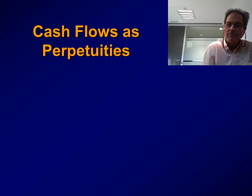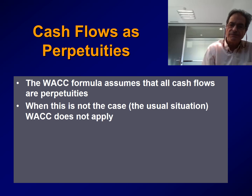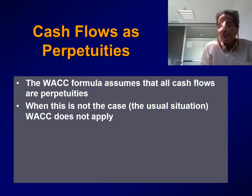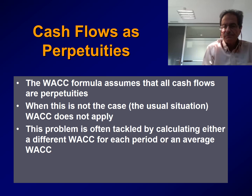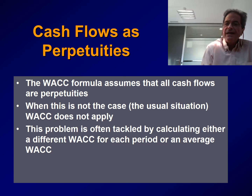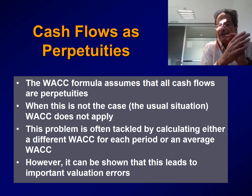The fourth limitation is the assumption of cash flows as perpetuities. The WACC formula assumes that all cash flows are perpetuities. When this is not the case, the WACC formula does not apply — and of course, that is the usual situation, since cash flows are generally not perpetuities, at least during the projection period. Usually, analysts tackle this problem by calculating either a different WACC for each period or a single WACC for the overall projection period. However, it can be shown that this practice leads to important errors.